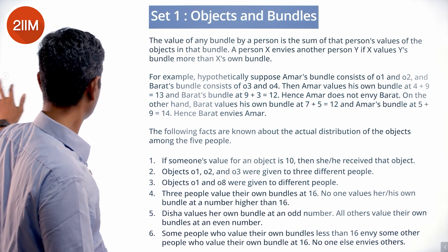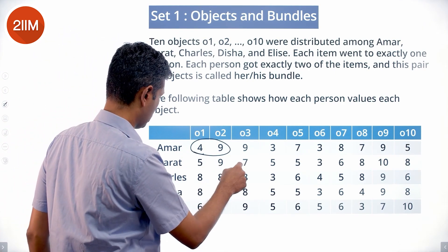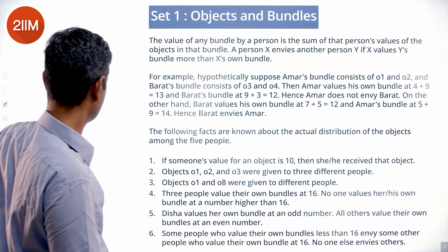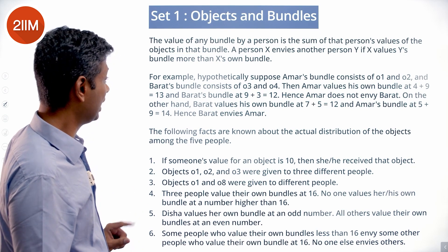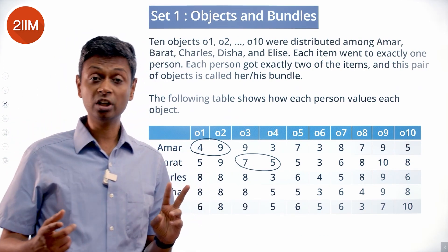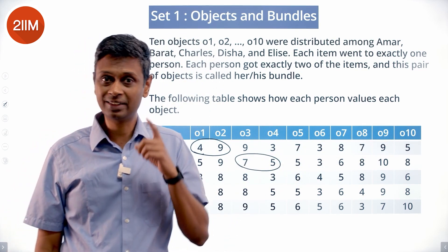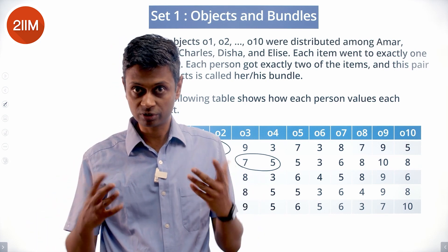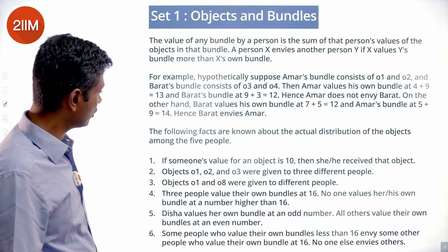For example, hypothetically suppose Amar's bundle consists of O1 and O2, and Bharat's bundle is O3 and O4. Amar values his own bundle at 4 plus 9 = 13, and Bharat's bundle at 12. Hence Amar does not envy Bharat. On the other hand, Bharat values his own bundle at 7 plus 5 = 12, and Amar's bundle at 9 plus 5 = 14. So Bharat envies Amar. Amar does not envy Bharat.